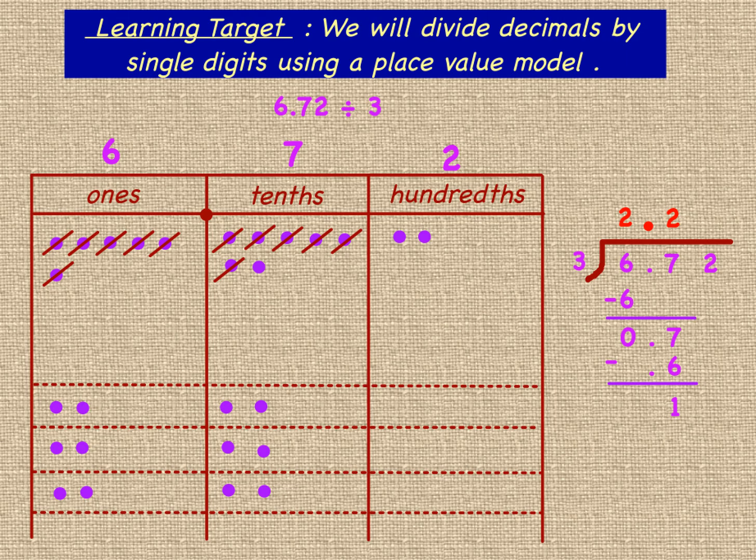Can we distribute 1 tenth equally into those 3 groups? Of course we can. What we'll need to do is change that 1 tenth into 10 hundredths, which we will do by placing 10 place value disks in the hundredths column and eliminating the 1 from the tenths column. We'll represent that in our standard algorithm and we'll see that we have 12 hundredths.